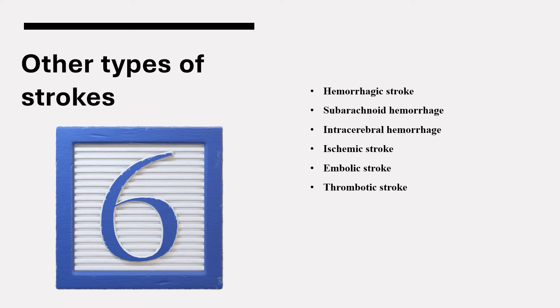Embolic stroke is caused by emboli — blood clots that travel from elsewhere in the body to blood vessels in the brain. 60% of all strokes in Americans are embolic strokes, and 25% of embolic strokes are related to atrial fibrillation, which is an irregular heart rhythm. Thrombotic stroke is caused by thrombi — blood clots that form where an artery has been narrowed by atherosclerosis, also known as atherothrombotic stroke.